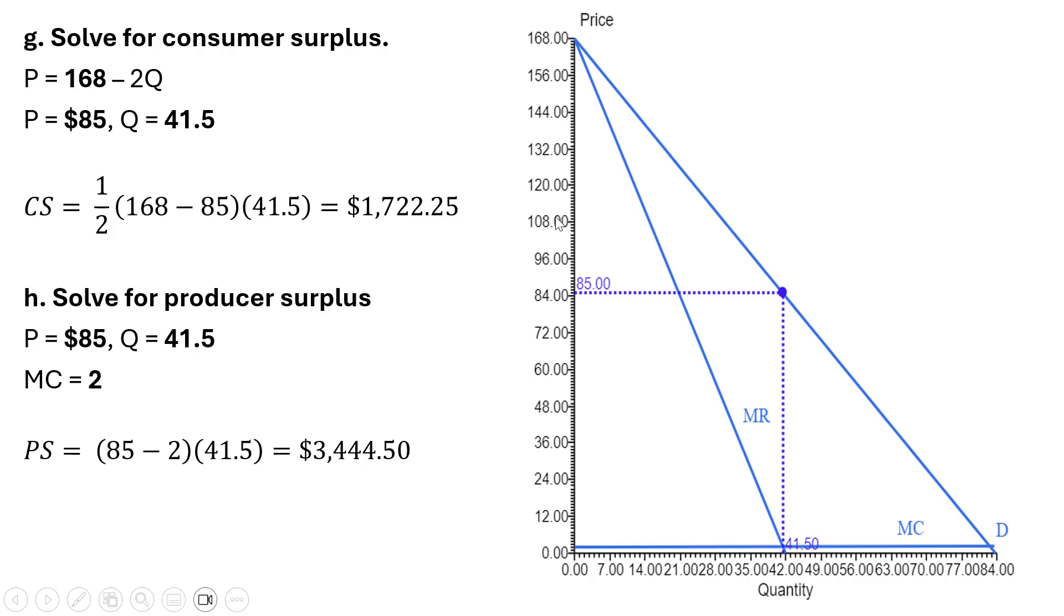The area of a triangle is one half base times height. So in this formula here for consumer surplus, we have that one half. And then we take the difference between the vertical intercept for the demand curve and the market price of $85. And then we multiply that by the profit maximizing output, the number of units that consumers buy. And we get a value here of a little over $1,700.